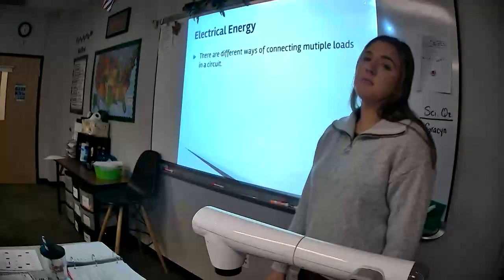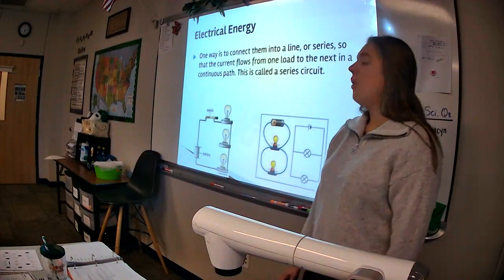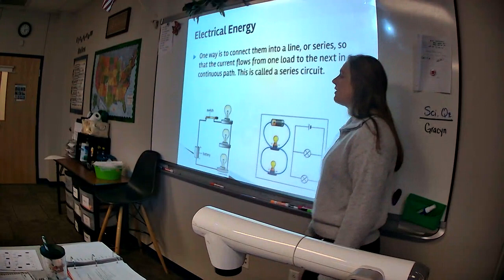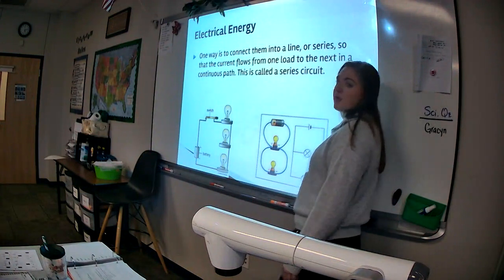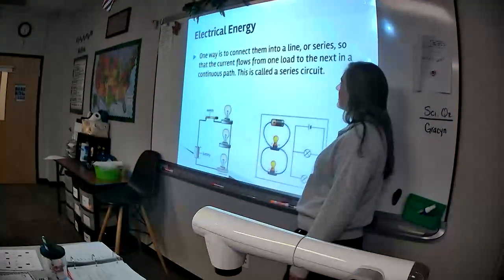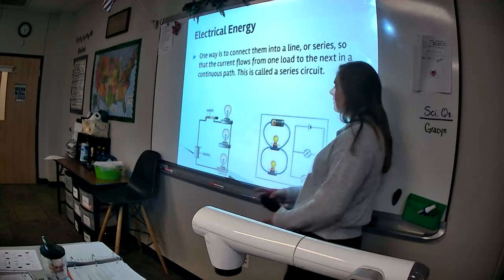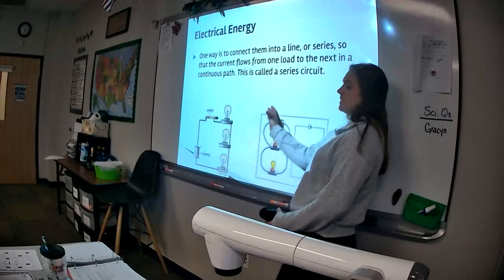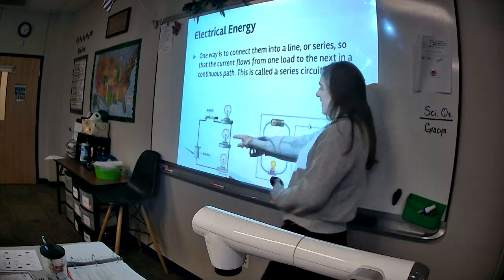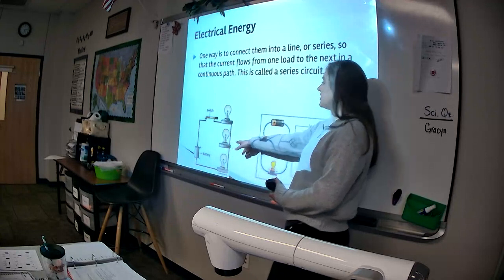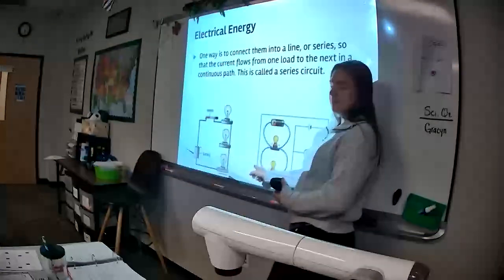Different ways of connecting multiple loads in a circuit. One way is to connect them into a line, or series, so that the current flows from one load to the next, and it continues to pass. This is called a series circuit. Not this picture. This is a different kind of circuit. It should not be on this slide. This is a series circuit. A series circuit has one path.